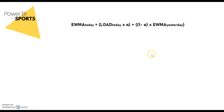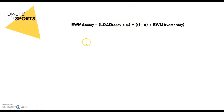For today I'm going to be using this formula — the formula for the exponentially weighted moving average. The moving average of today will be equal to the load of today (your total distance, high speed running, or whatever metric you have) multiplied by alpha, plus 1 minus alpha multiplied by the exponentially weighted moving average of yesterday.